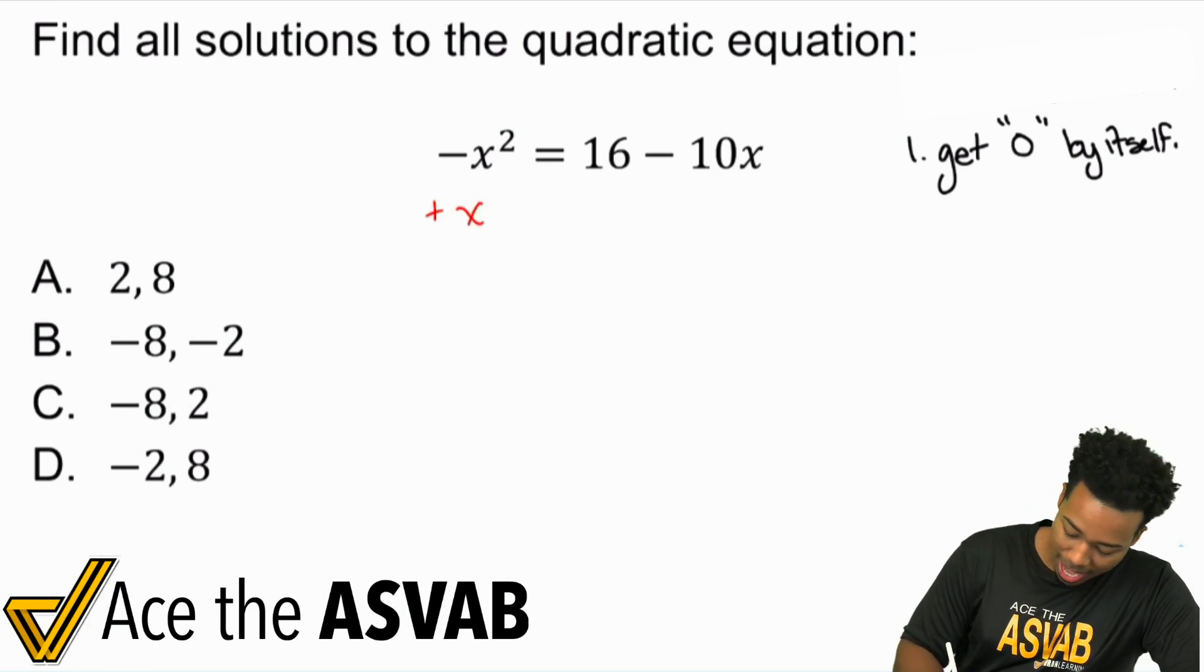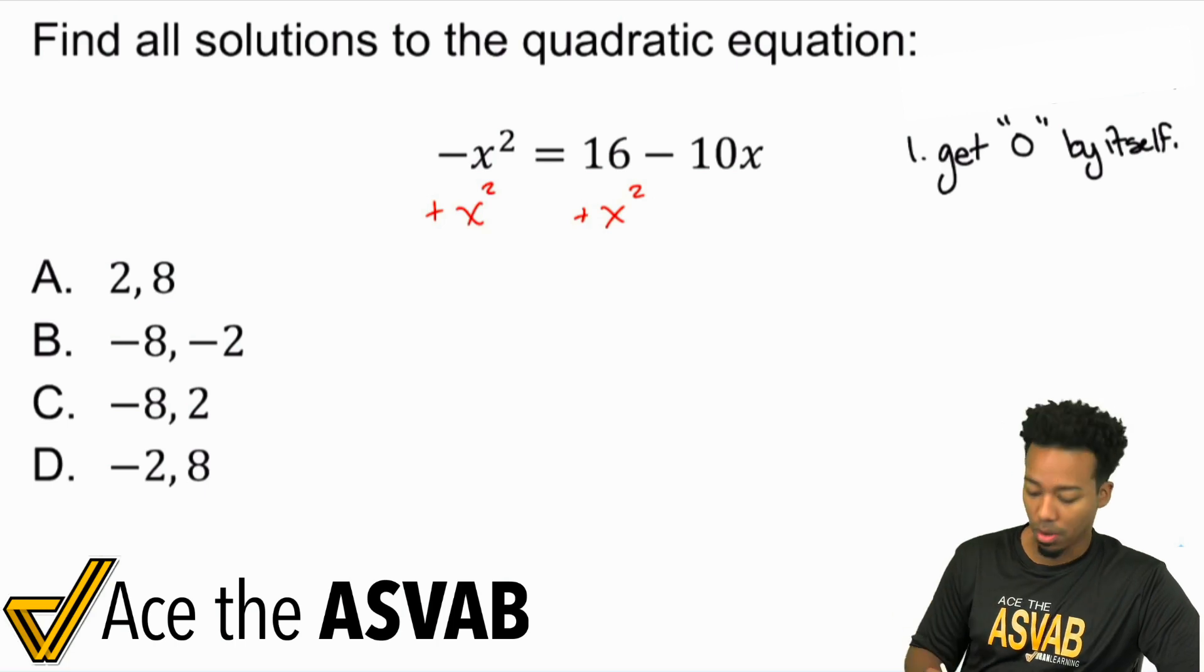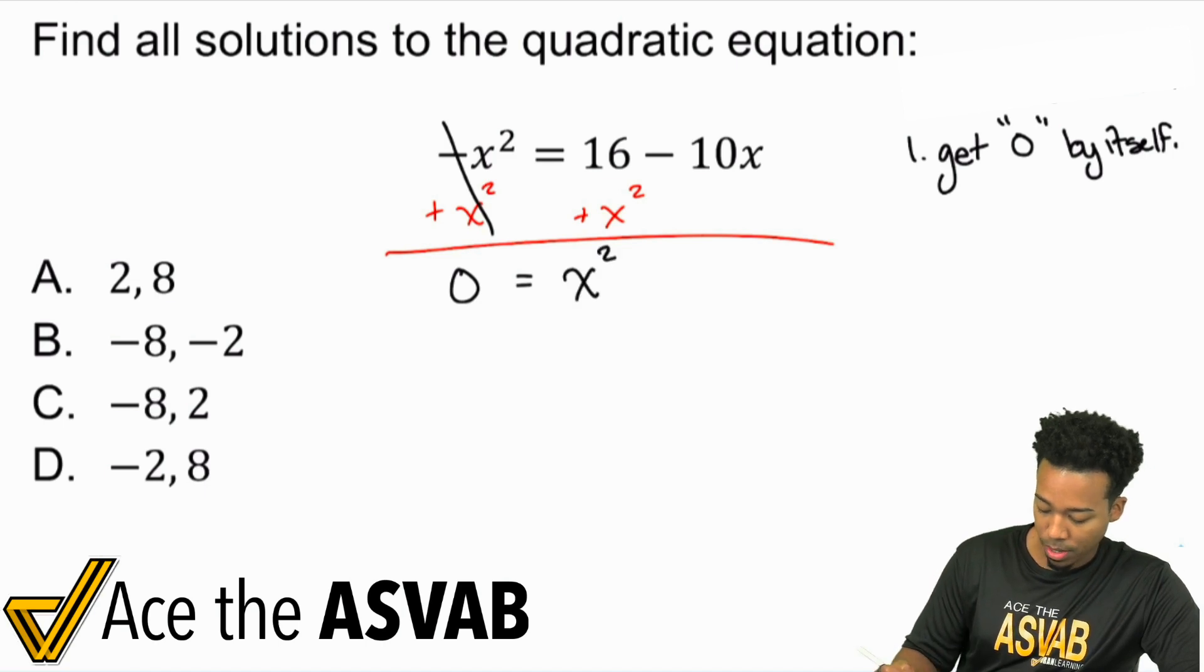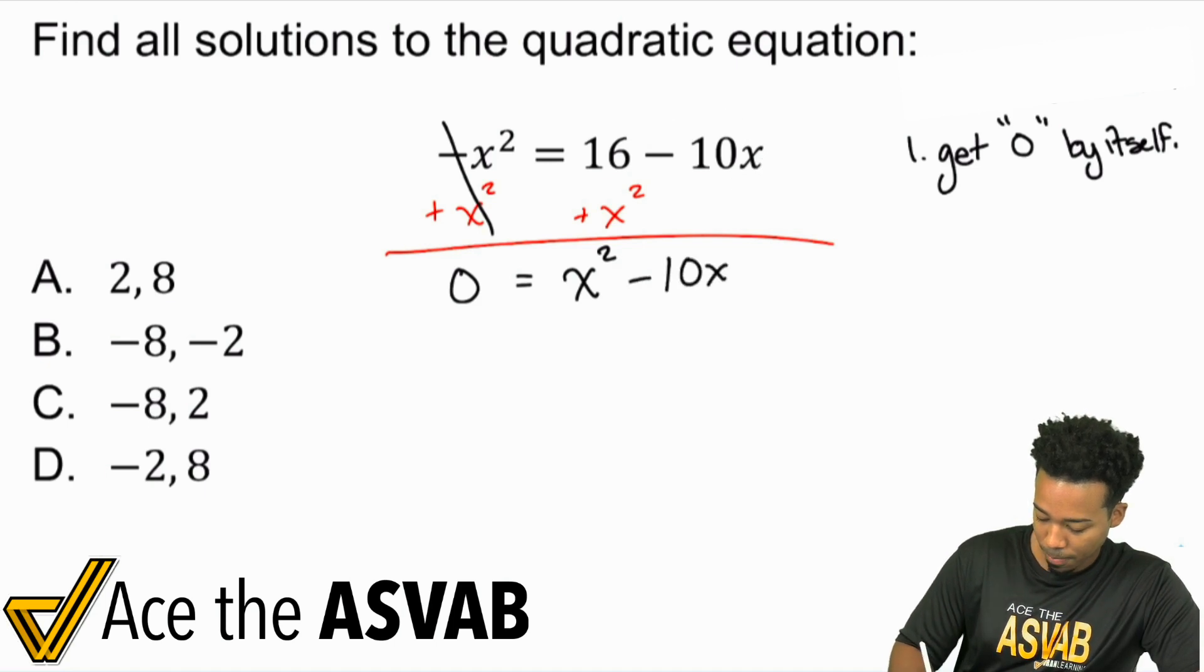So let's go ahead and show you what that looks like. First things first, what I'm going to do is I'm going to add x squared to both sides. This is the easiest way to get a zero on one side. So zero, because again that cancels out, equals x squared. And I'm going to write this in order, so instead of writing the 16 first, I'm going to write the minus 10x first and then plus 16.